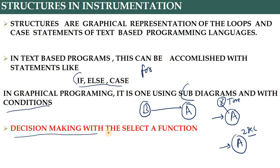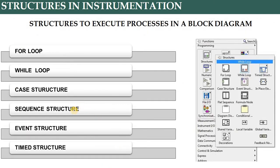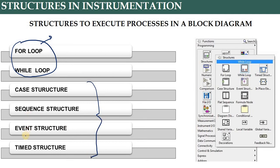Basically, a structure does the work of perfect decision making — not just letting data flow generally, but determining when, why, where, and for how long it flows. All these W's — why, when, where, while — are answered by structures. The types of structures include for loops, while loops, case structures, sequence structures, event structures, and timed structures.